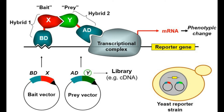Once these two vectors are expressed inside the yeast, you can try to see the interaction in such a way that if X and Y actually come in contact with each other, the binding domain will be able to locate the upstream activation sequence — the place where it binds to the DNA — and it will allow the activation domain to bring the RNA polymerase complex into a transcriptional state so that it can activate the transcriptional machinery.